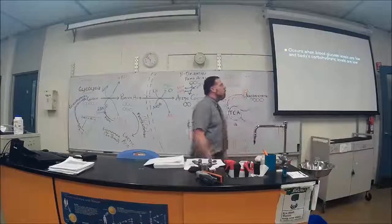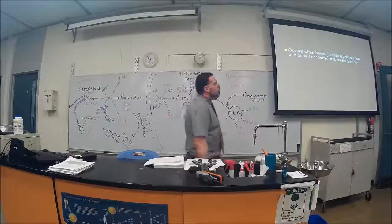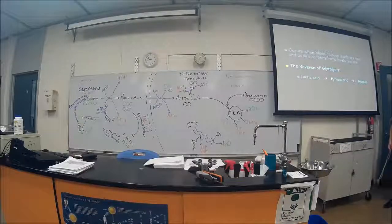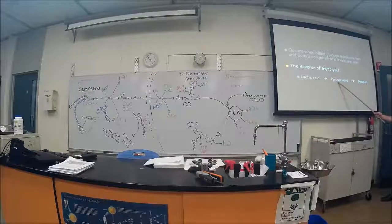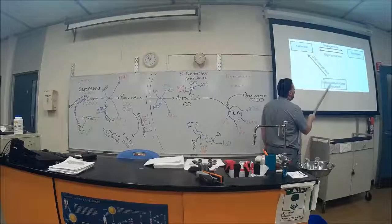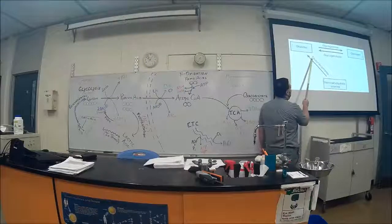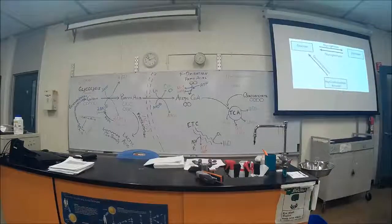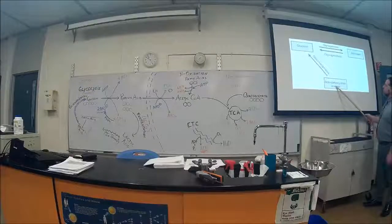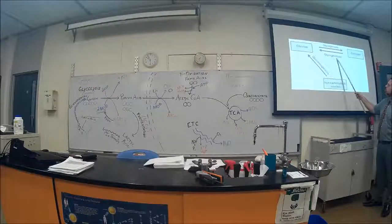Gluconeogenesis occurs when glucose levels and carbohydrate levels are very low in the blood, and the body needs to make more glucose. It's basically the reverse of glycolysis, but it's not a simple reversible reaction — different enzymes are required. It takes lactic acid, converts it to pyruvic acid, and makes it back to glucose. You can take glycogen or non-carbohydrate sources and make glucose by way of gluconeogenesis.